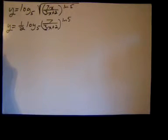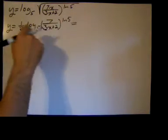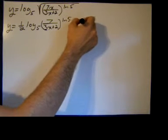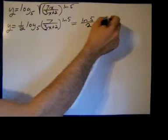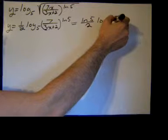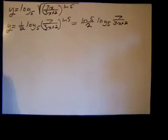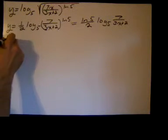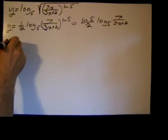Now I can bring that natural log of 5 power down in front so I can say natural log of 5 over 2 times the log base 5 of 7x over 3x plus 2.